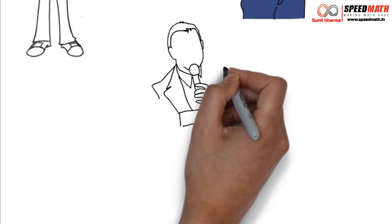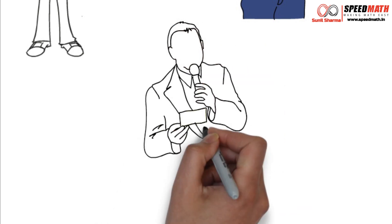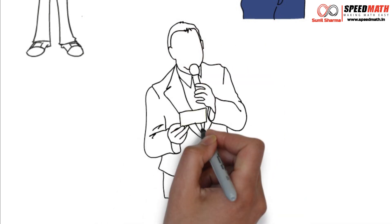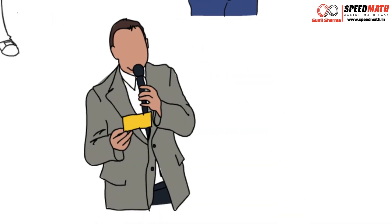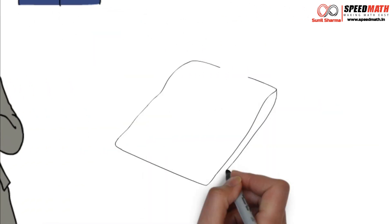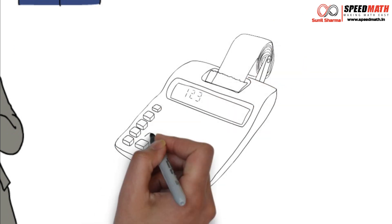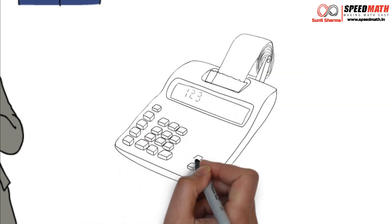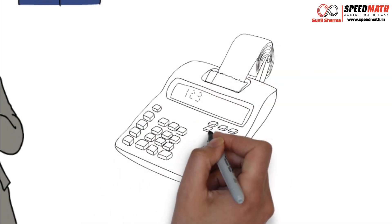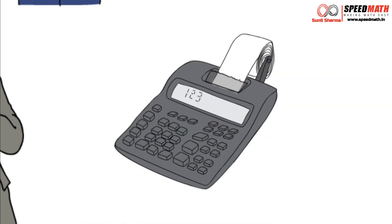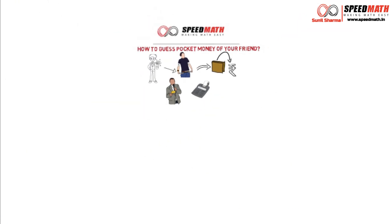Now to perform this trick, you need to be a great performer. You need to convince your friend to do certain calculations without revealing the amount. You need to give him a calculator so that he can do all the calculations you mention. Here are the steps.